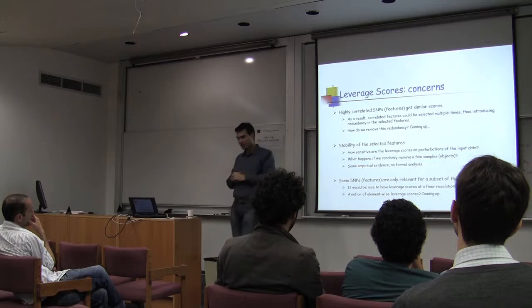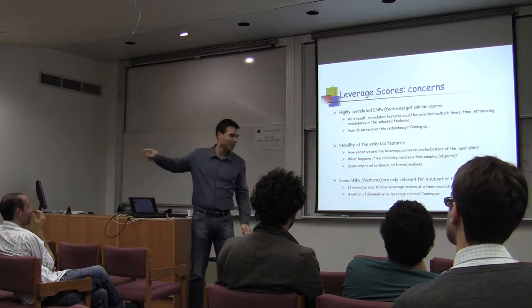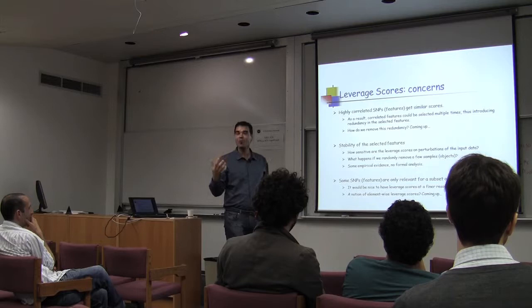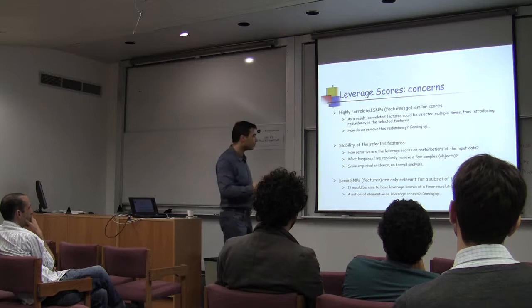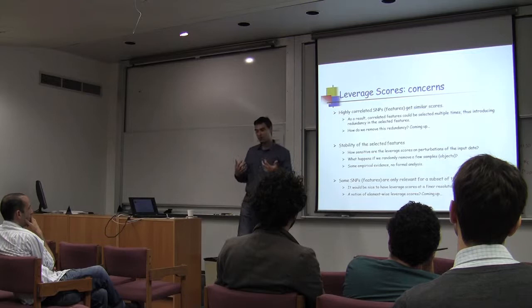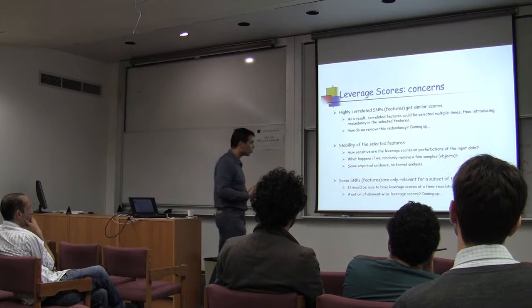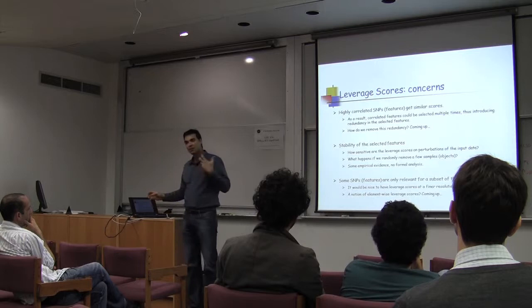Second concern: stability. How sensitive are the leverage scores to small perturbations in the data? If you omit a few samples, do the selected SNPs change a lot? Empirical evidence suggests reasonable stability, but there is no formal analysis yet, and the empirical evidence is fairly weak at this point. Third: some features are only relevant for a subset of objects, so you'd like finer control — looking at blocks of a matrix or even individual elements — which motivates element-wise leverage scores.